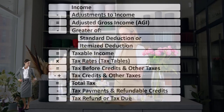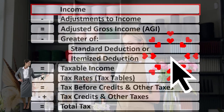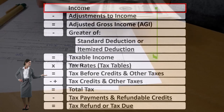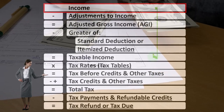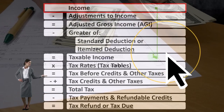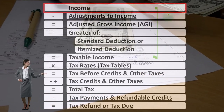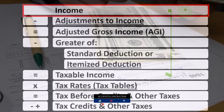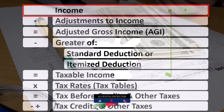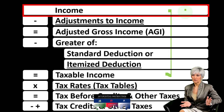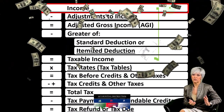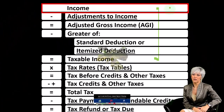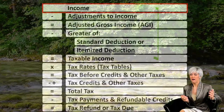Looking at the income tax formula, we're focused on line one — that being income. Remember, the first half of the income tax formula is in essence an income statement, although it's just the outline, the scaffolding, with other forms and schedules feeding into it. When we think about line one, we're focused primarily on the Schedule C, which is in essence an income statement for a business: income minus expenses, which we can think of as business deductions, getting to net income that flows into the top line of our income tax formula.